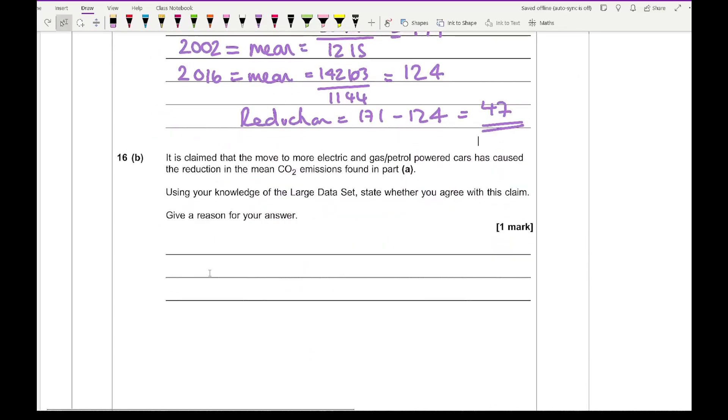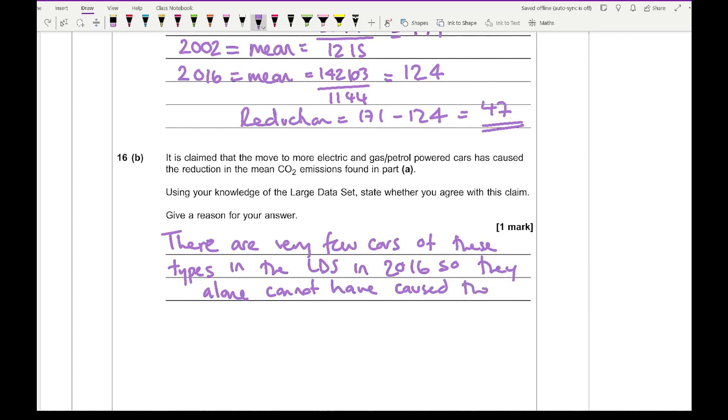For 16B, it says it is claimed that the move to more electric and gas petrol powered cars has caused the reduction in the mean CO2 emissions found in part A. Use your knowledge of the large data set. State whether you agree with this claim. Give your reason for your answer. I would say that there are very little or few cars of these types in the large data set in 2016, so they alone cannot have caused the reduction in CO2 emissions. Something along those lines will be fine for the single mark.